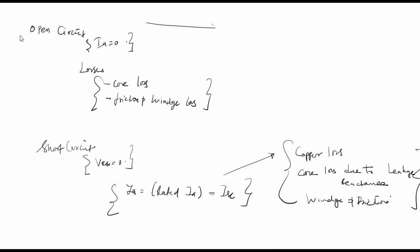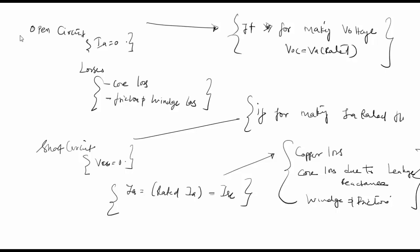Suppose at the time of open circuit, the field current IF is required for making the voltage VOC equal to VA rated. And when you are having a short circuit, if the field current IF dash is required for making IA rated flow, then the ratio of IF and IF dash is what is known as the synchronous reactance.